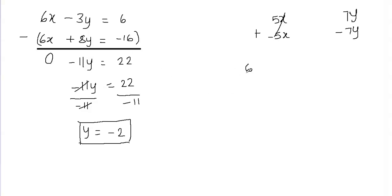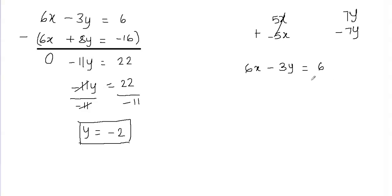I'll use the first equation to find x: 6x minus 3y equals 6. If you have too many negatives in one equation, use the other equation which is easier to solve.